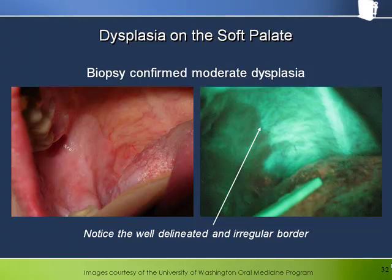It is nevertheless instructive to compare the fluorescence presentation with that under white light. This is a good example of how a white keratinized patch, despite the presence of keratin which fluoresces, can look dark through the Velscope because of the underlying mechanisms of loss of fluorescence — both the decrease of FAD in the epithelium and the breaking of collagen crosslinks in the connective tissue.